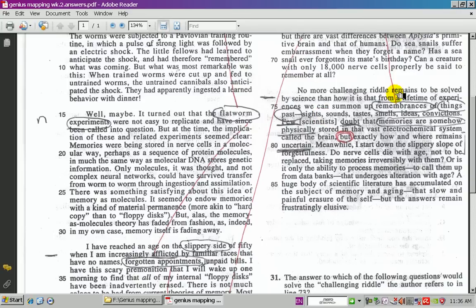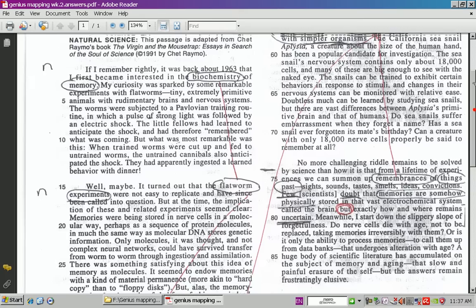We go ahead and circle that. And it says, no more challenging riddle remains to be solved. We haven't figured it out. It sounds negative. They're still stumped. We don't know how we remember. And then you go down here. It says, few scientists doubt memories are somehow physically stored. Biochemistry of the brain. But, go ahead and circle our main flip-flopper here. You know that this topic sentence is negative. Science, we haven't figured out how people remember stuff. We've tried everything. We've tried to work with people. We've tried to work with flatworms. We've tried to work with simpler organisms. But we're not quite sure how the human brain remembers. That is the big picture when you genius map this particular passage out.